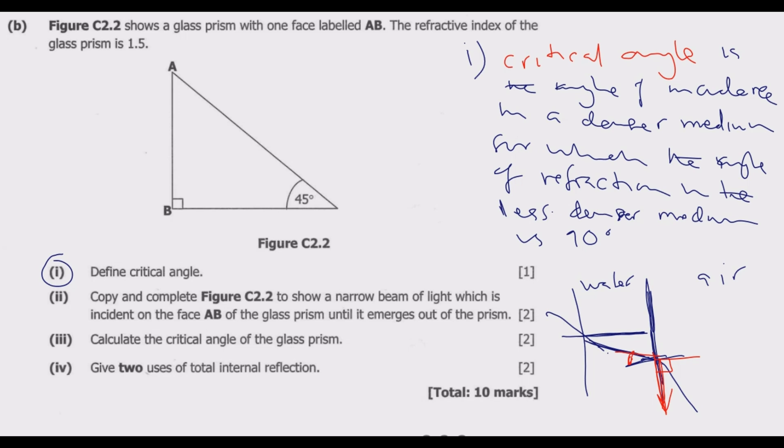Number 2: copy and complete figure C2.2 to show a narrow beam of light which is incident on face AB of the glass prism until it emerges out of the prism. The ray of light will come and enter - this is 90 degrees, so this is the normal, and this is the angle of incidence.